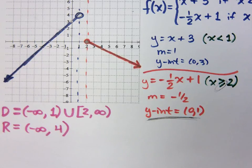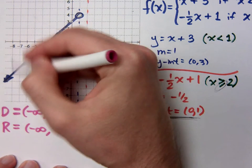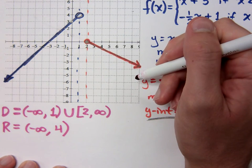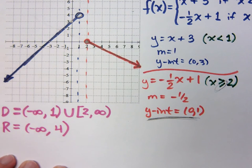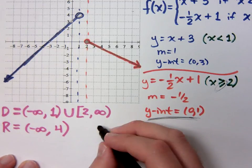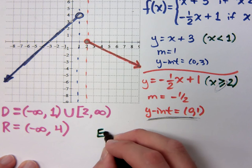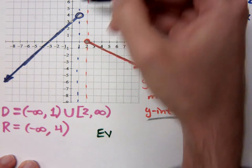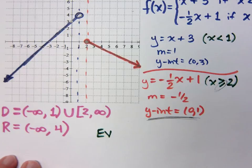I want to ask some questions about this function. It is a function, right? The vertical line test says every vertical line crosses through at most one point — and everywhere a vertical line crosses, it passes. Since it's a function, I can evaluate it.